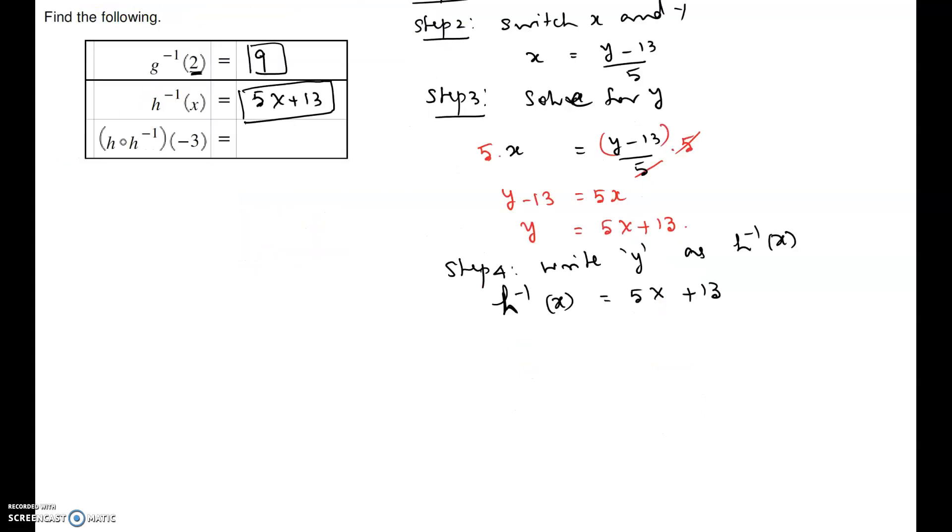Next, we will do h composite h inverse at negative 3. Let us write that left hand side h composite h inverse at negative 3. By definition it is h without changing the order, h inverse at negative 3. Whenever you do the composite function, you have to keep the outer function as is and we have to work on the first, we have to evaluate the inner one, that is h inverse of negative 3.